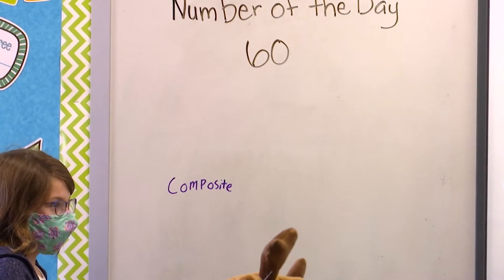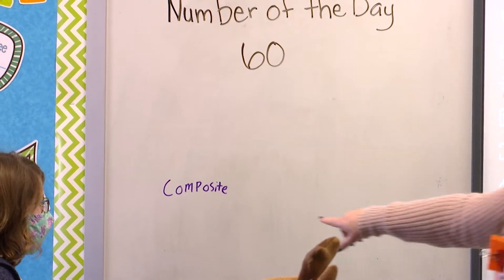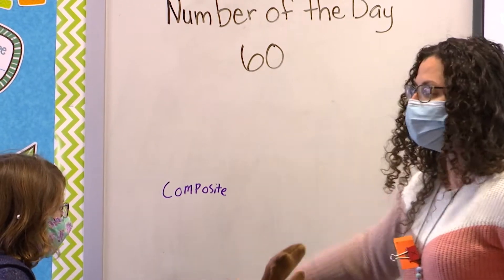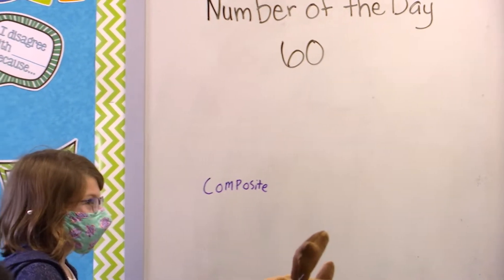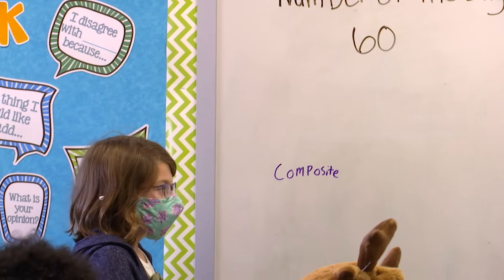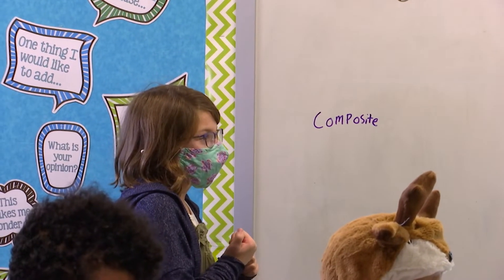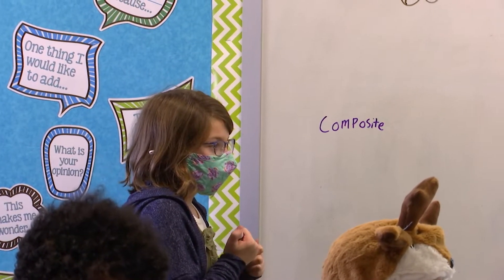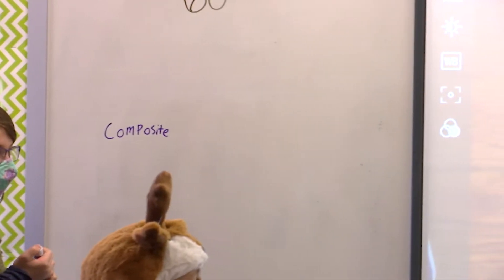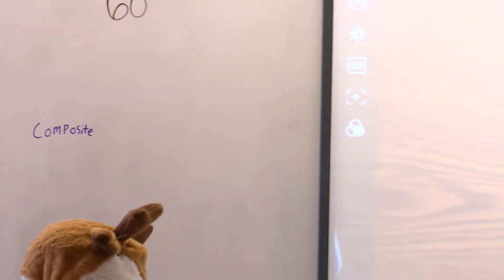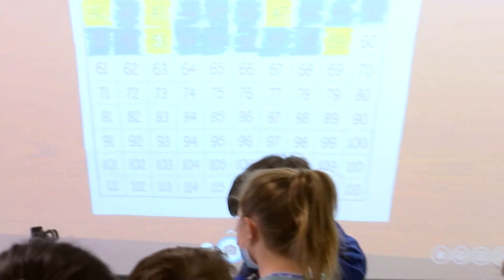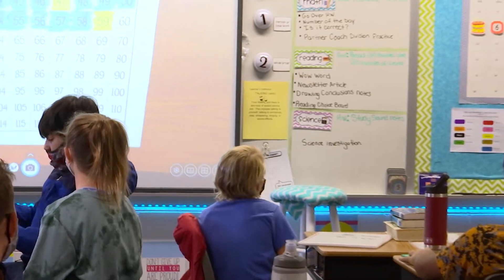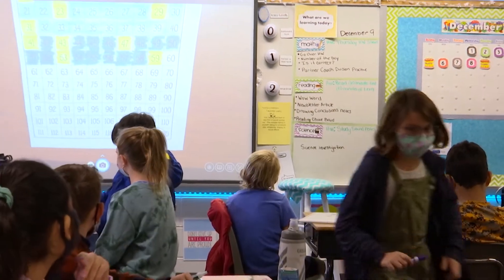So we have a — what, Cortland? It is a composite number. And Cortland, explain how you know it is a composite number. It has more than two factors. Do we agree? Yes. All right, so what am I shading in for our number of the day today? Blue. We are going to shade it in blue. It is a composite number.